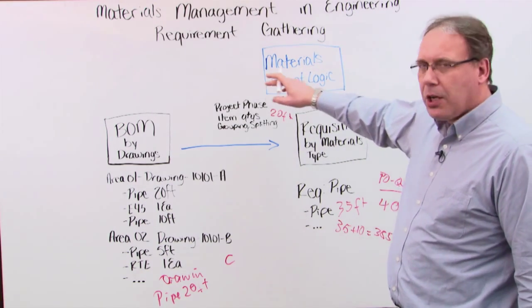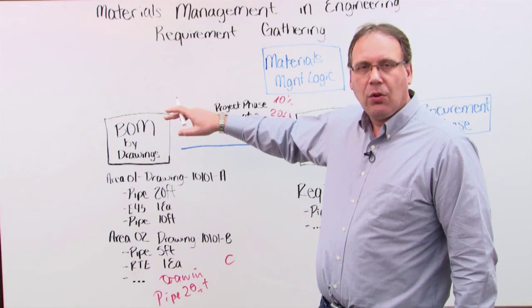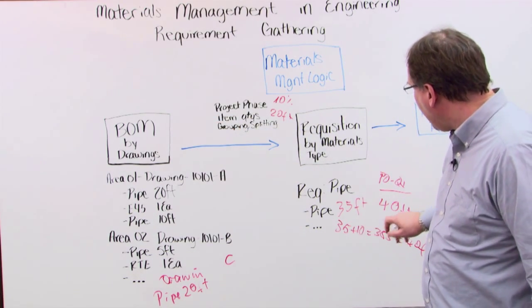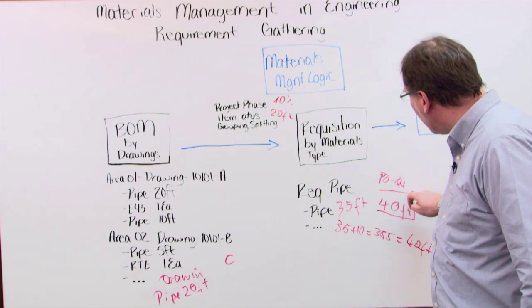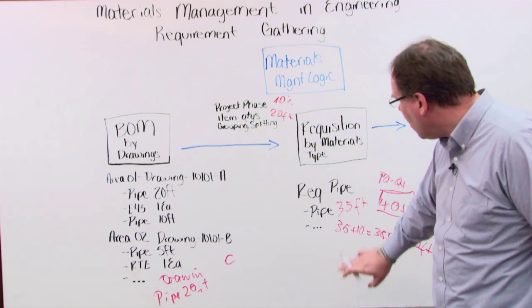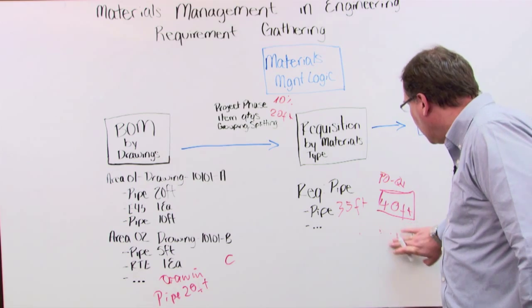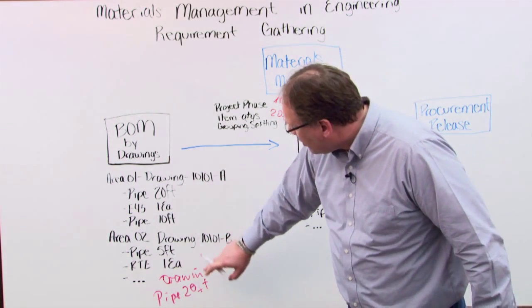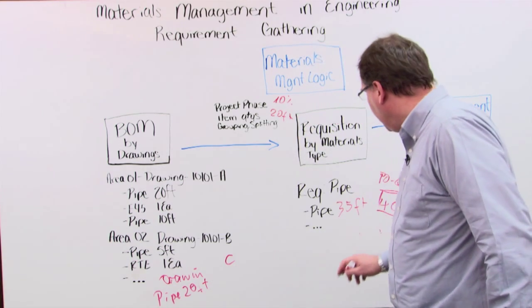Now you start your materials management logic again. You compare the quantities. The system is then saying, okay, I bought 40 foot before. Okay, now let me just remove this. I need 35 plus 20. I need 55 foot. Alright?